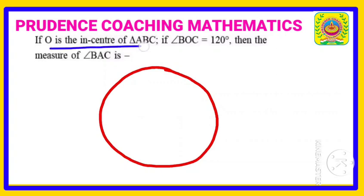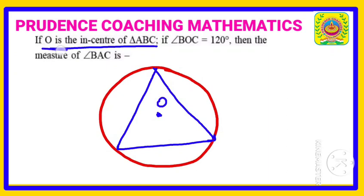If O is the incenter of triangle ABC, that means within this particular circle there is a triangle like this, and the center of this particular circle is the incenter. Let it be O according to the question. So let us write A, and this triangle is ABC. It is given triangle is ABC.